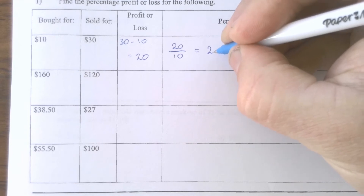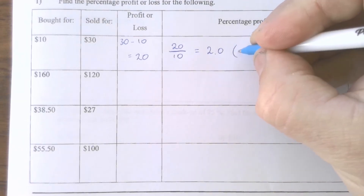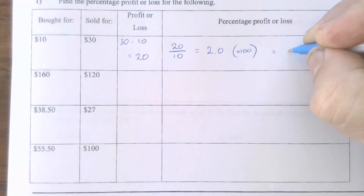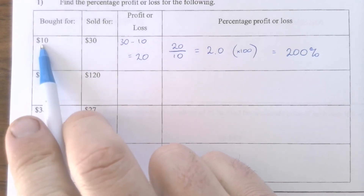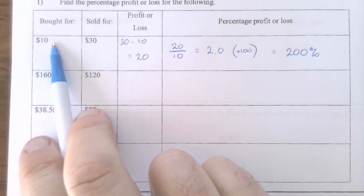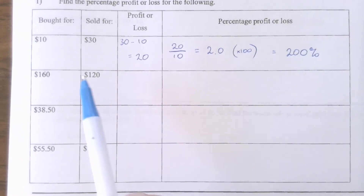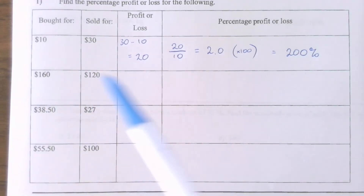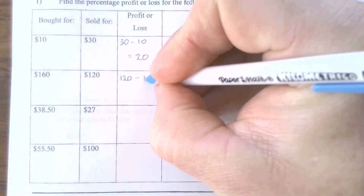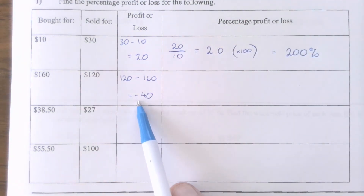Now this is a decimal form — it's 2.0 if you like. To get this into a percentage, I need to multiply it by 100, and that gives me a profit of 200%.